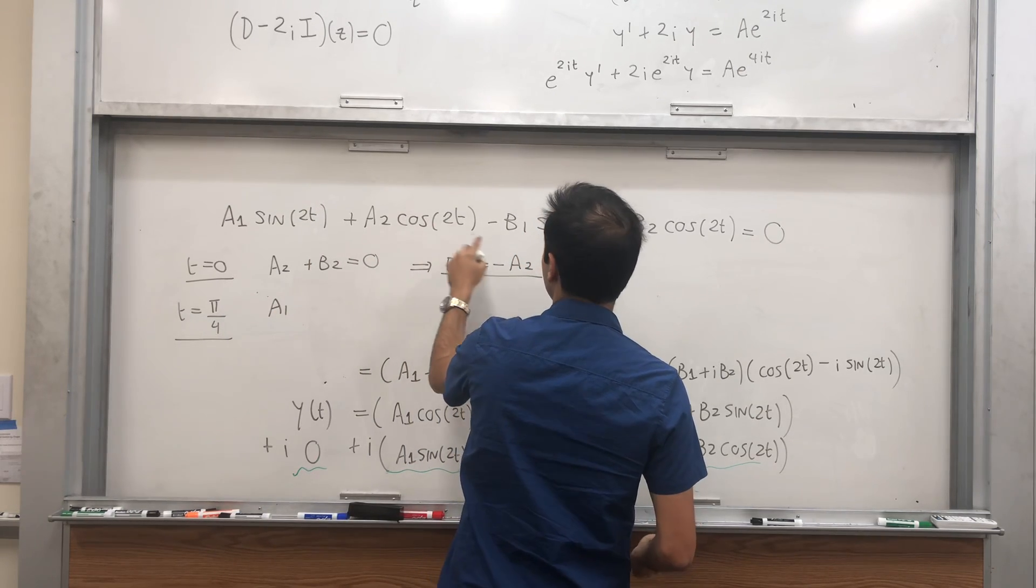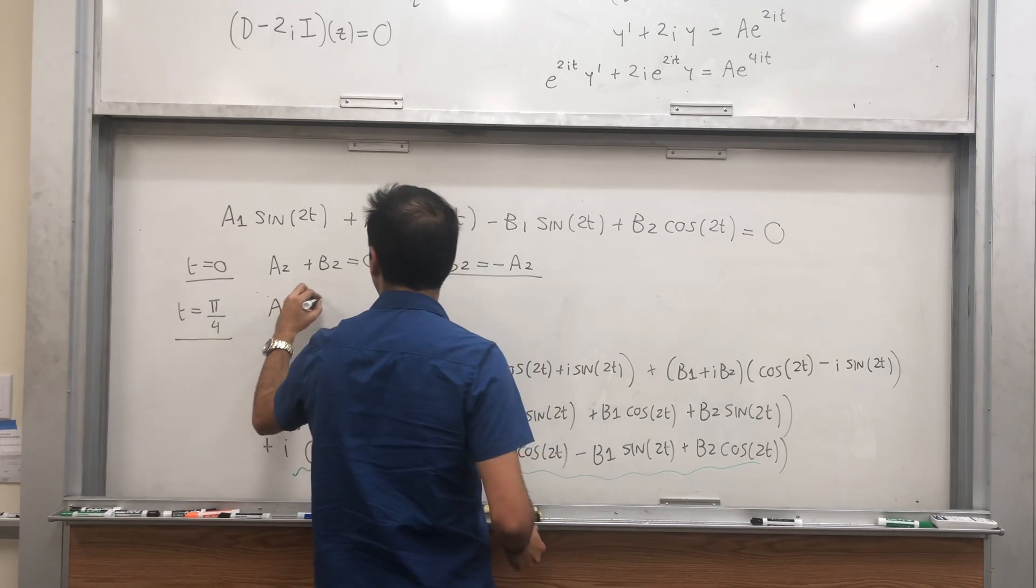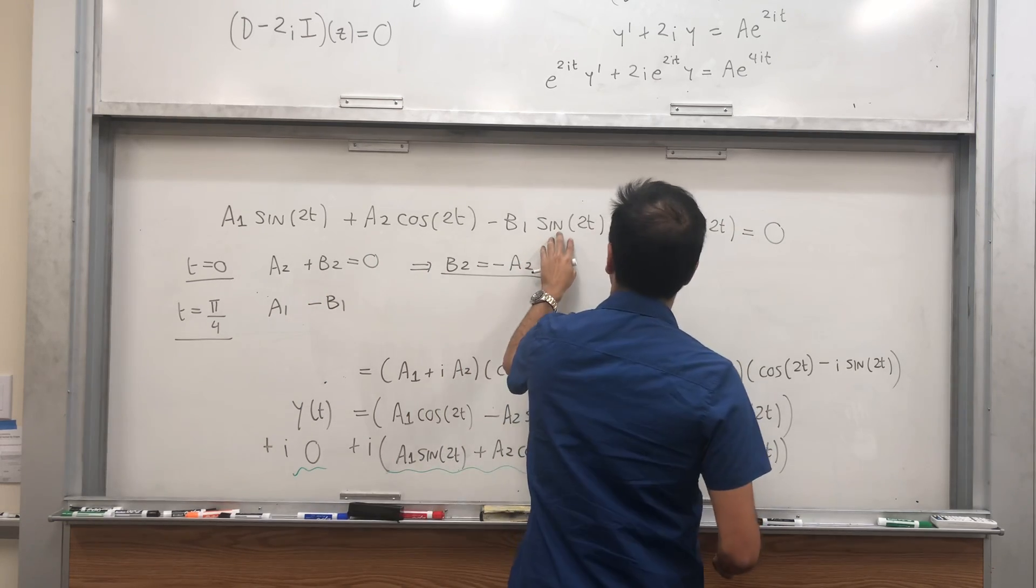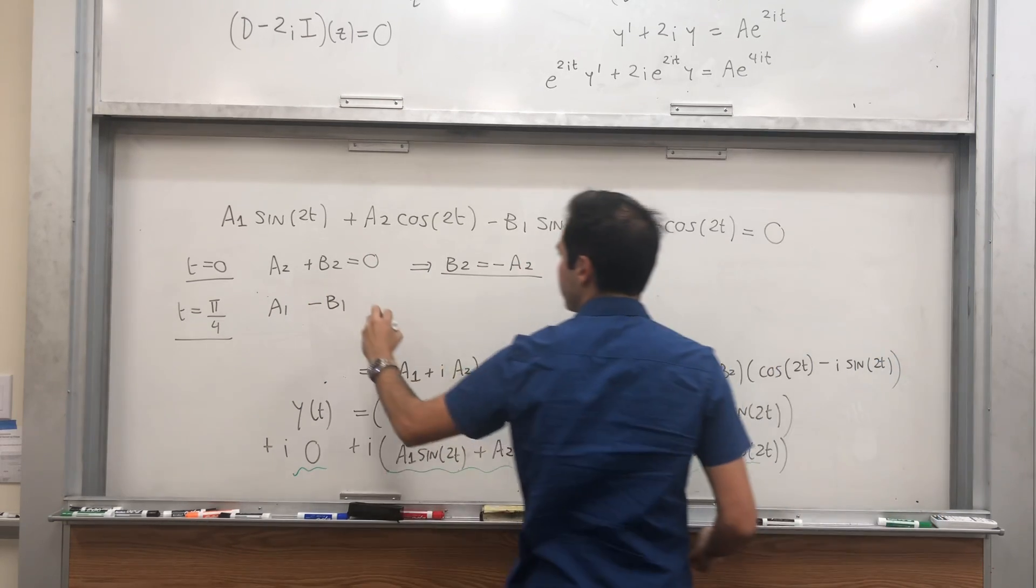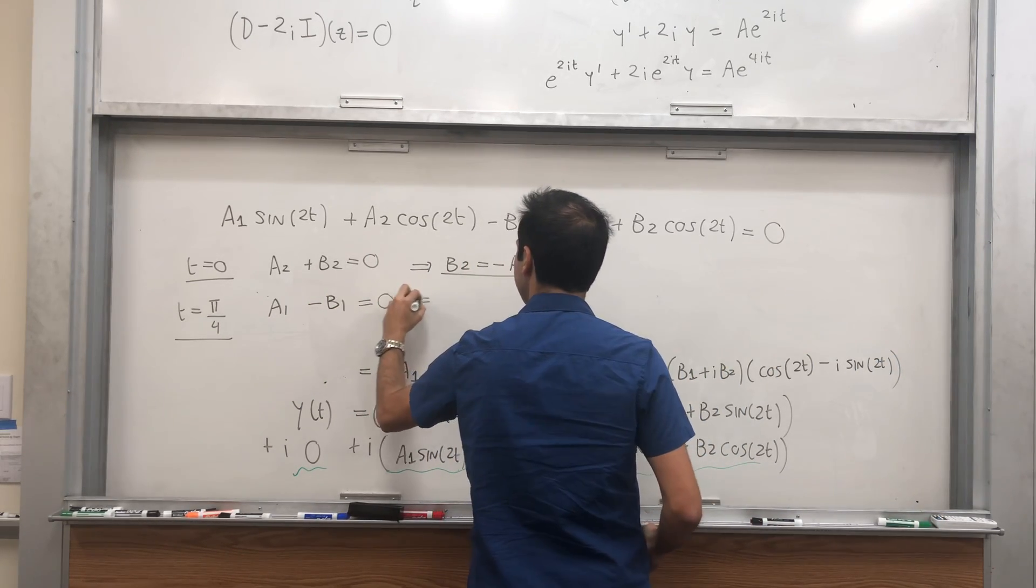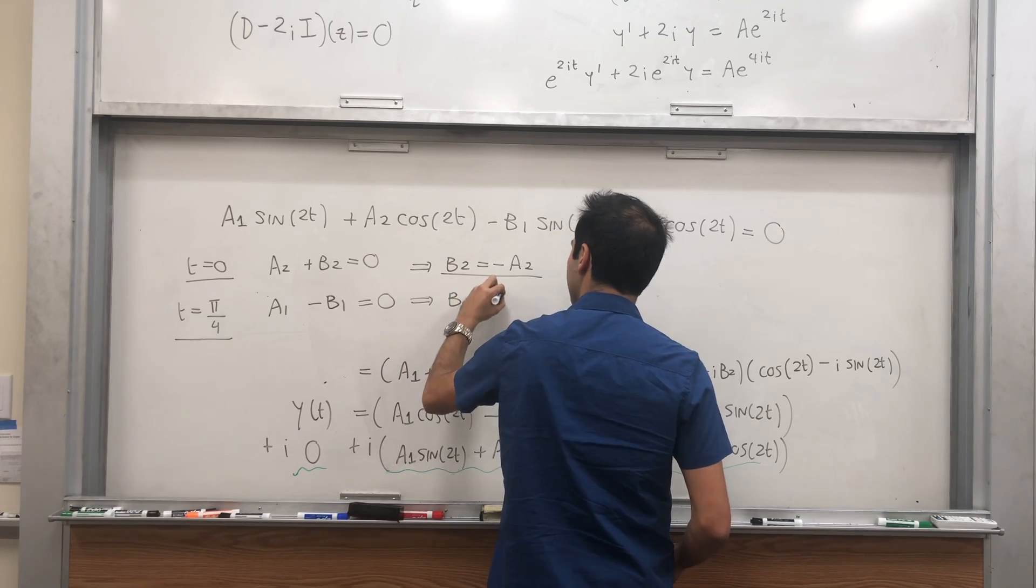Cosine of pi over 2 is 0, minus b1 times 1, plus b2 times 0, that is 0. And so, indeed, we get b1 equals a1.